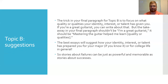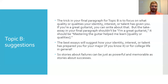The trick in the final paragraph for Topic B is to focus on the qualities you have as a result of this identity, interest, or talent. For example, if you're a great guitarist, you could say mastering the guitar has helped you learn X, Y, or Z. As a football player, you've experienced a lot of adversity and that has helped you learn to never give up no matter what the score is. The best essays will talk about how this identity, interest, or talent has prepared you for college life. Stories about failures can be just as powerful and memorable because you still learn from failures and develop certain values and beliefs from them.